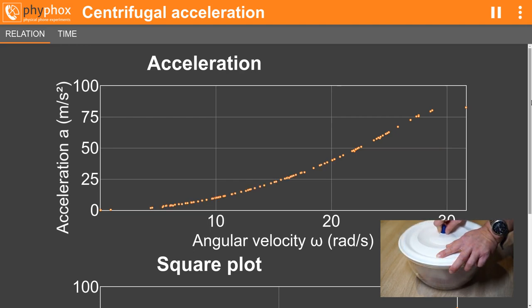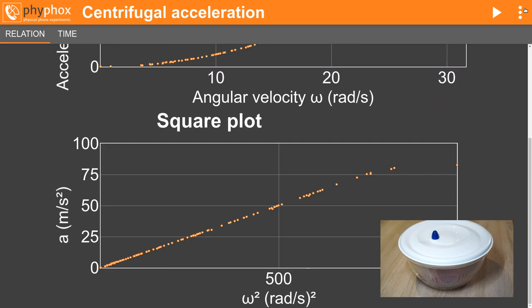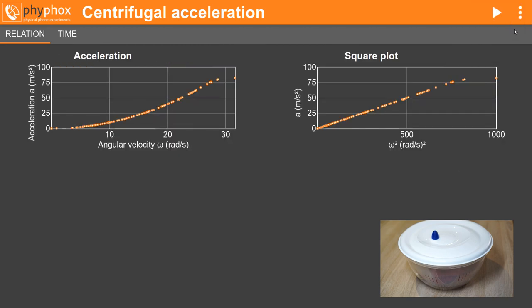You will find that the centrifugal acceleration increases with the square of the angular velocity. Phyphox even shows a square plot to verify this. If you look into the theory behind this, you will learn that the actual relation also involves the radius, which you could also extract from the data.